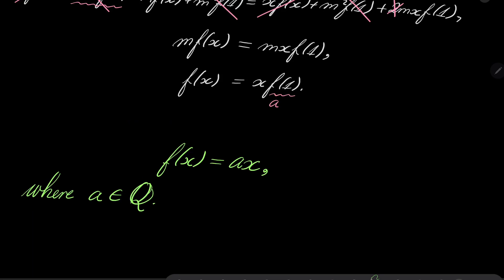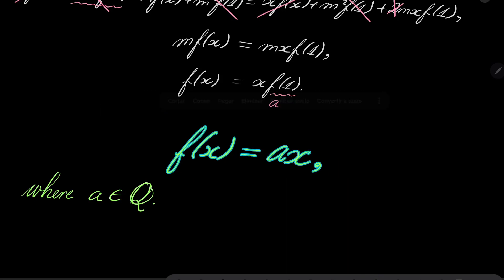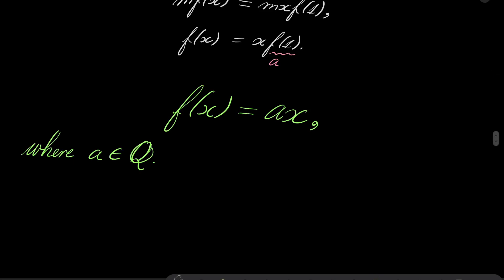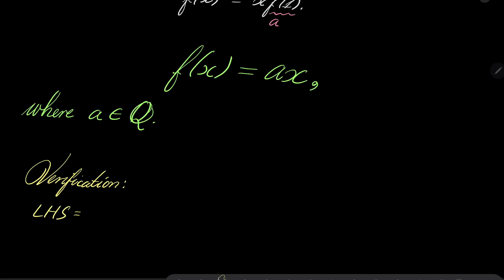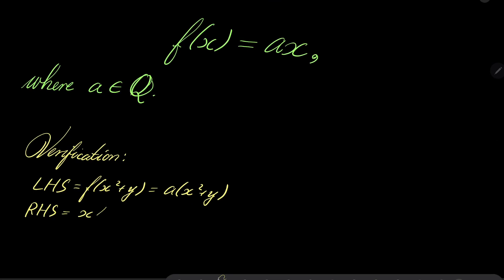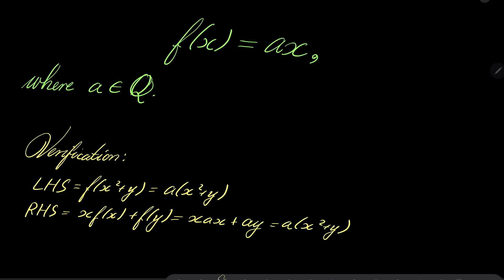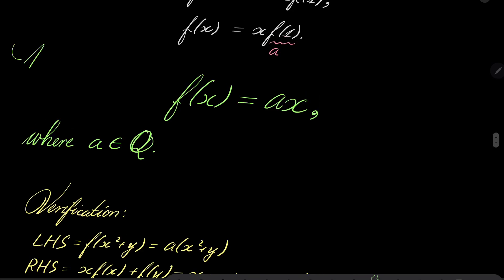All we need to do now is verify that any linear function of this form satisfies our equation. On the left-hand side we have f of x squared plus y, which is a times x squared plus y. On the right-hand side we have x times f of x plus f of y, which is x times ax plus ay, giving a times x squared plus ay. It's exactly the same. So the solutions to our equation are linear functions of the form f of x equals ax. Thank you very much for watching. I hope you've learned something new, and I will see you next time. Goodbye.